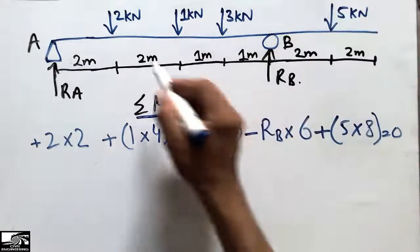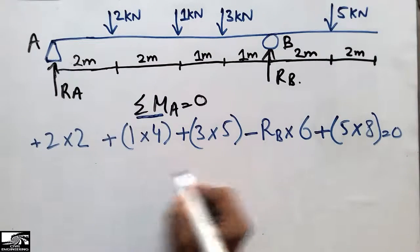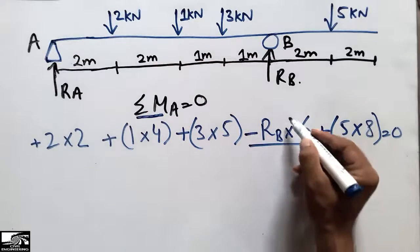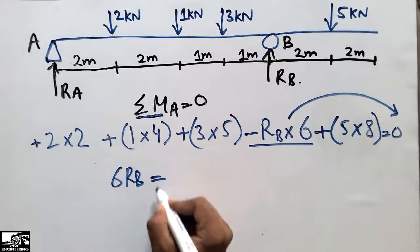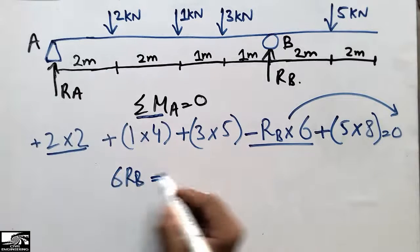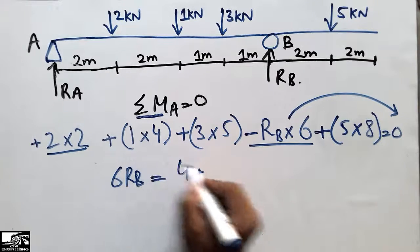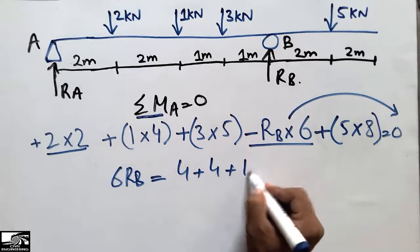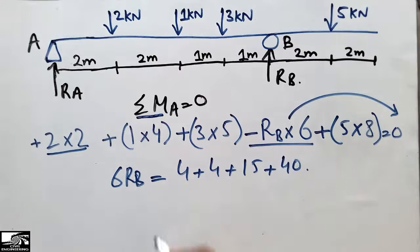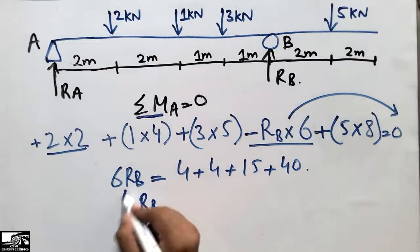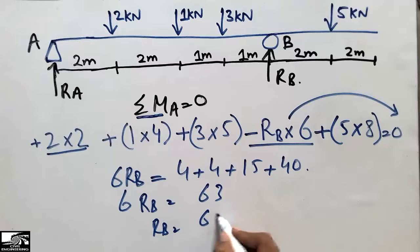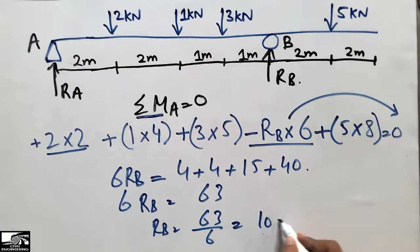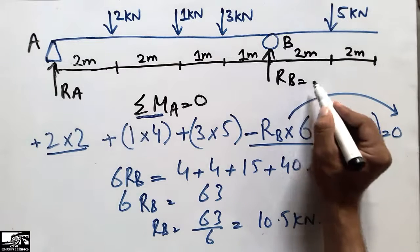Simplifying and transferring RB to the right side: 6·RB = 4 + 4 + 15 + 40 = 63. Dividing 63 by 6, we get RB = 10.5 kN. So the RB reaction is 10.5 kN.